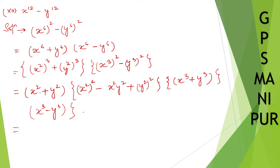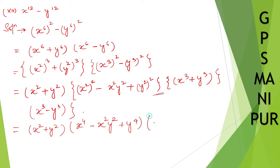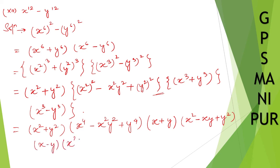So now x squared plus y squared, write it down as it is. Then x squared whole square gives x to the power 4 minus x squared y squared plus y to the power 4. Now we have done this step. Next, x cube plus y cube: the formula is a plus b times a squared minus ab plus b squared. And a cube minus b cube is a minus b times a squared plus ab plus b squared.